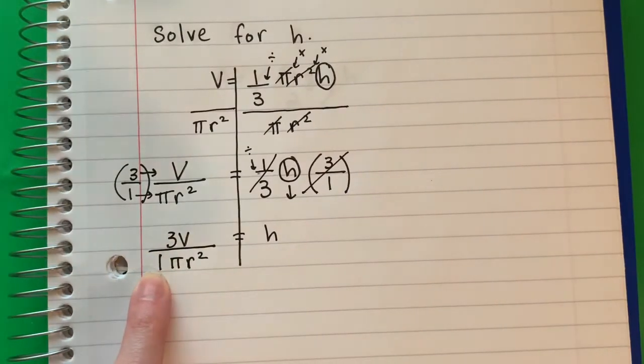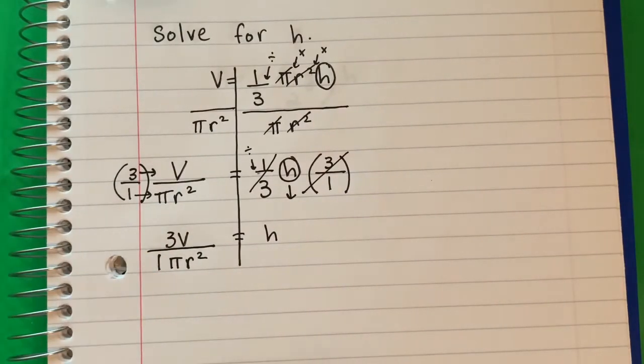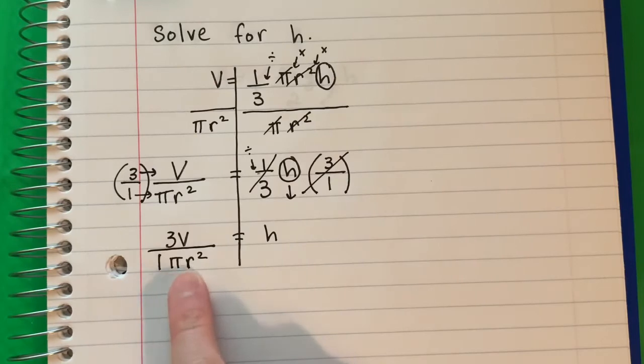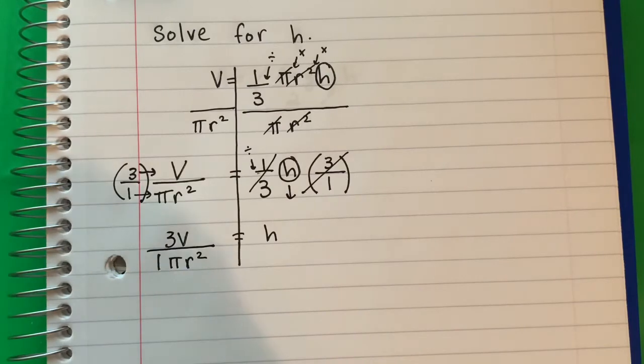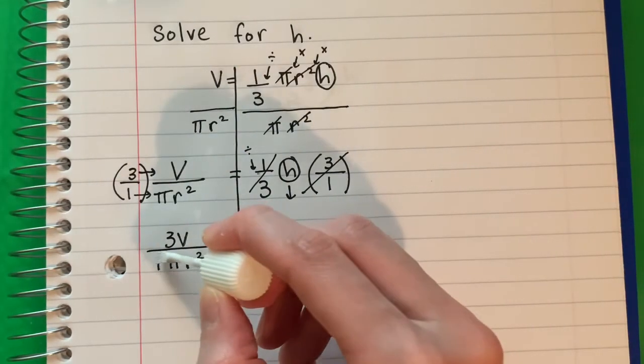Divided by 1 times π r squared is 1 π r squared. Now the 1, I don't need. It's optional because 1 times π r squared is the same. It's π r squared. No necesito el 1, es opcional, porque 1 por π r cuadrado es igual que π r cuadrado. So I'm going to go ahead and just erase that. I don't need that 1.